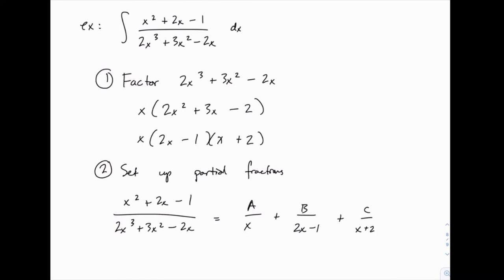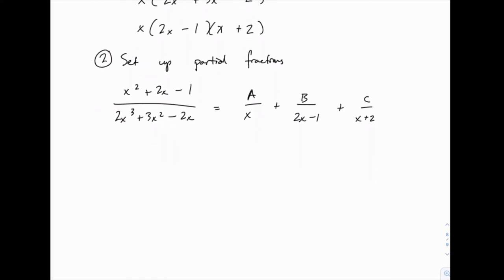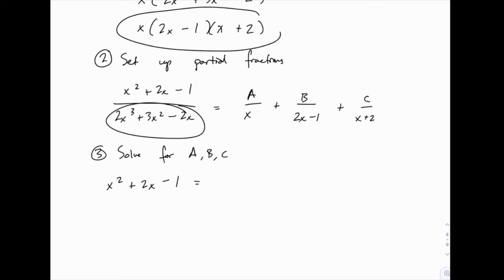And now when we go to solve for A, B, and C, because there's no repetition, it'll actually work out pretty easily. Because now when we multiply both sides by that denominator, the only thing left on the left side is the numerator. And on the right side when we multiply, we know that this denominator equals x times 2x - 1 times x + 2.